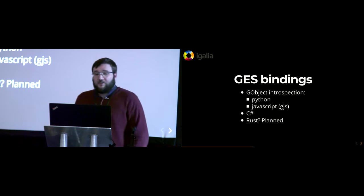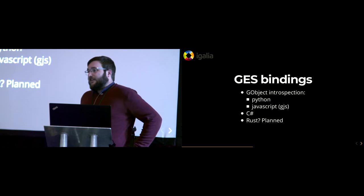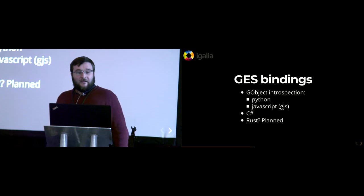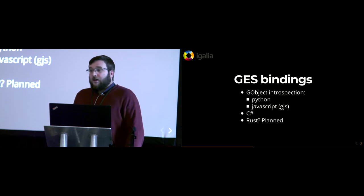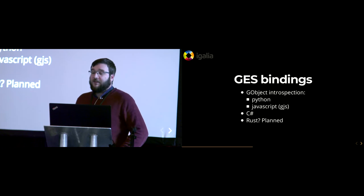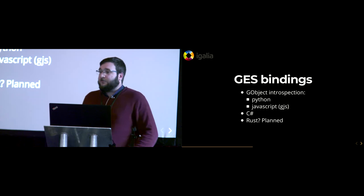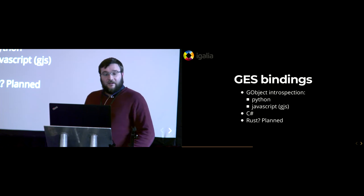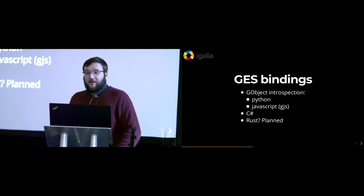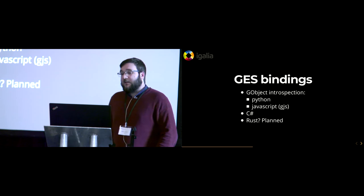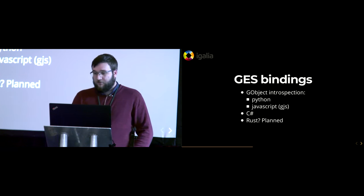In terms of bindings, the GES library is fully introspectable. We have Python bindings that are very well tested because the PTV application is actually using them — it's written in Python. We have JavaScript bindings through GJS; that's not really tested but I've been told it works. We also have C# bindings through GStreamerSharp, installable via NuGet directly, so it's really simple to get started on Windows and use GES in C# on whatever platform. We are planning on generating Rust bindings as well — annotations are pretty much complete in GES, so it's basically a matter of doing the work.